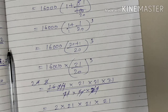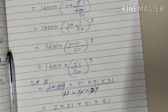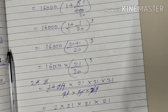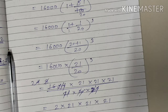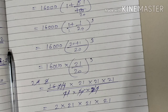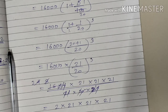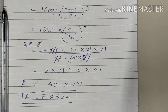Make a multiplication of all this. 2 into 21 is 42, and 21 into 21 is 441. So multiplication of 42 and 441 gives us Rs. 18,522. This is the amount at the end of 3 years. Is that clear to everyone?